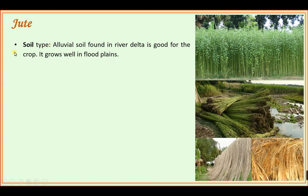For growing jute, the soil type required is alluvial, found in river deltas. It grows well in flood plain areas where there is a good supply of rainwater. It is usually grown in the kharif crop season, so flood plain areas are ideal for its production.